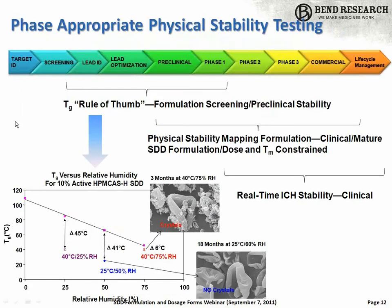Discussing stability a little more now — the third key attribute of formulation. We take what we call a phase-appropriate approach to testing and understanding physical stabilities of STDs. At a high level, you can have stability in a dispersion in two ways. One is you can have a thermodynamically admissible system so that the drug, at the loading being used, is thermodynamically soluble in the polymer, and there's in effect no driving force at all to phase-separate or crystallize.